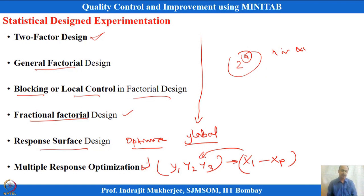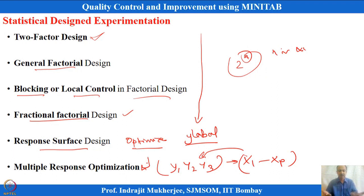We will start with two-factor design first, which is the extension of one-way analysis of variance. When x1 is changed with more than two levels, we use analysis of variance; if it is two levels, we use a two-sample t-test. Analysis of variance controls the Type I error, kept at a fixed level such as 0.05. We will then go for two-factor experimentation.